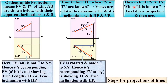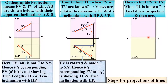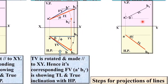Now the reverse process: if you have the true length and want to find the front view and top view, how do you do it? Earlier we found the true length from the front view and top view by following certain steps. Now the reverse process — you have the true length and want to find the front view and top view. See carefully, you have to follow exactly the reverse process.